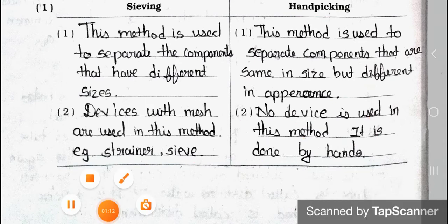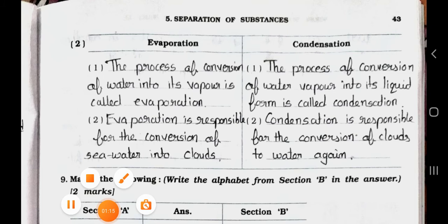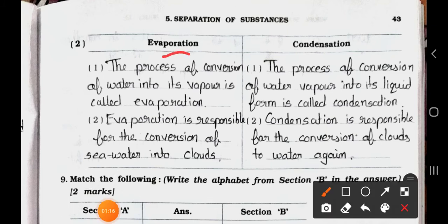Now see the next page. See number 2: Evaporation and condensation. Point 1 - In evaporation, the process of conversion of water into its vapour is called evaporation. And condensation, the process of conversion of water vapour to its liquid form is called condensation.